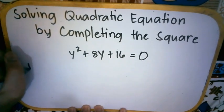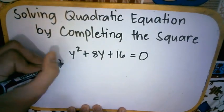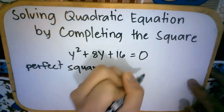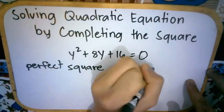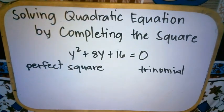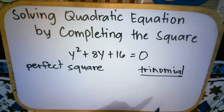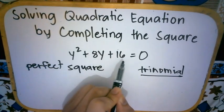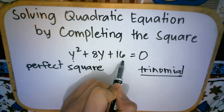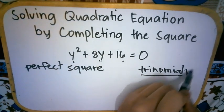Let's have perfect square. And we have trinomial. Yung trinomial madali lang. Pag sinabing trinomial, three terms. So, ito ay example ng trinomial. We have 1, 2, 3. Three terms, we call it trinomial. So, we're done with trinomial.